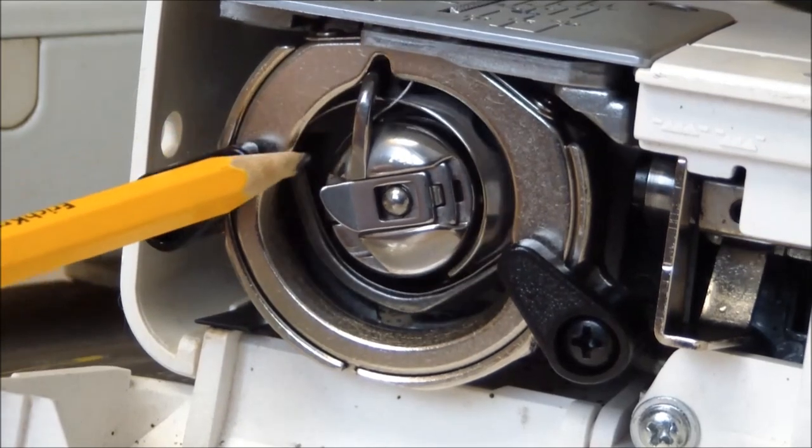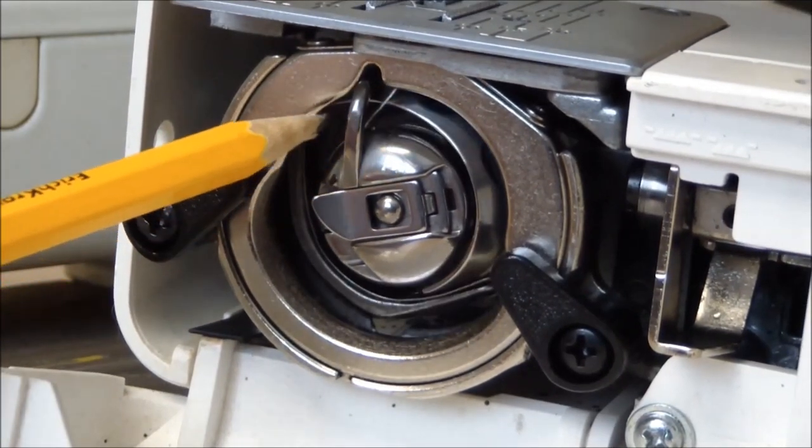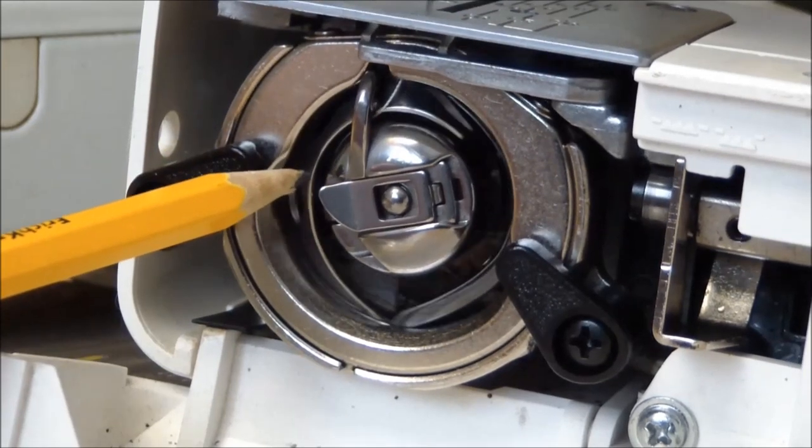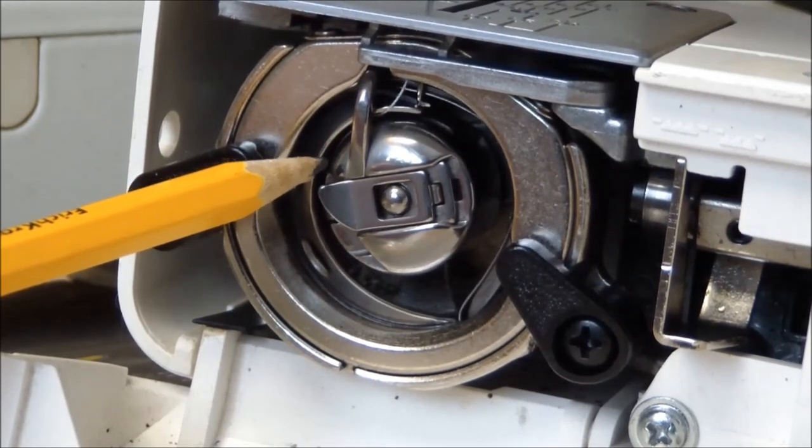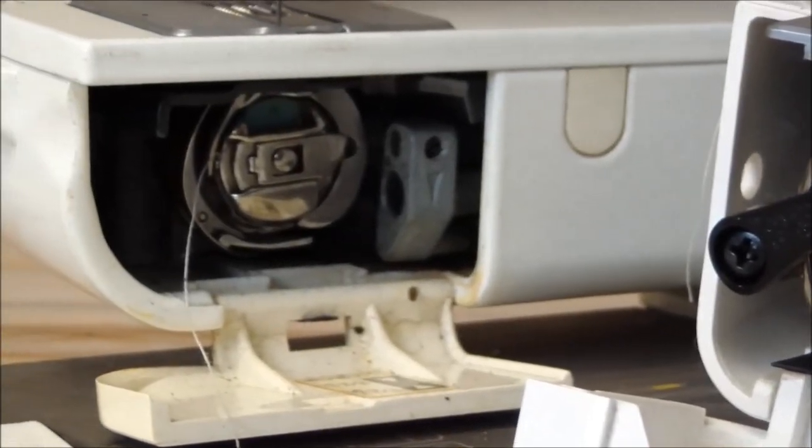The first thing to look for is the type of sewing machine shuttle. Used old sewing machines usually have either an oscillating shuttle or a vertical rotating one.